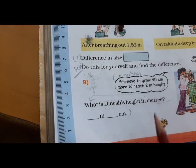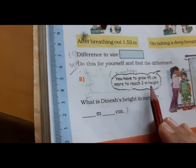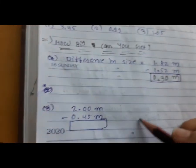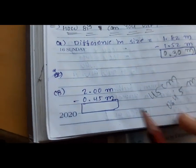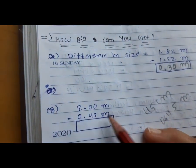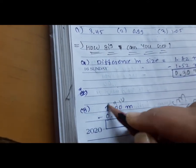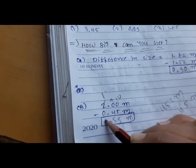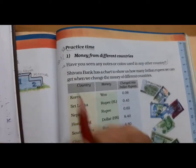Height in meters or centimeters — here we do 2 meters minus 45 centimeters. First convert 45 centimeters to 0.45 meters. Then 2.00 minus 0.45: 10 minus 5 is 5, 9 minus 4 is 5. Answer: 1.55 meters, which is 1 meter 55 centimeters. Write it down.